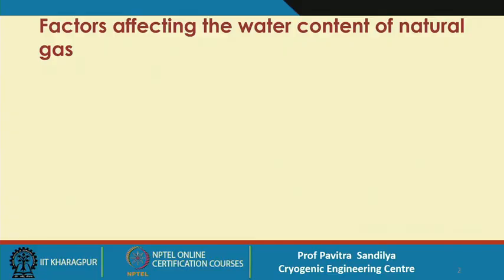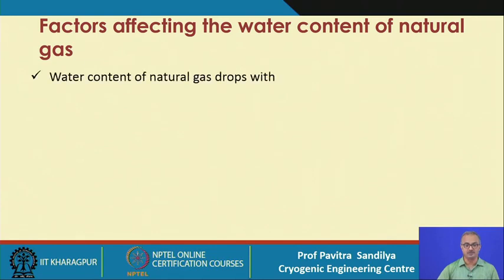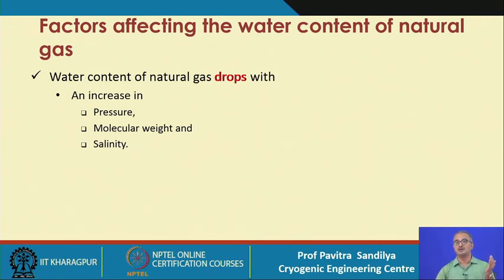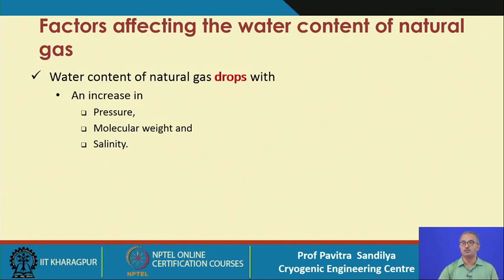Here I want to tell you about the factors affecting the water content of natural gas. Please note that the water content of natural gas decreases with an increase in pressure, because if you increase the pressure, the vapor will start going into a liquid phase. Water will start coming out of the natural gas. The molecular weight and the salinity — higher the molecular weight, naturally it will have a tendency to go more to the vapor phase.